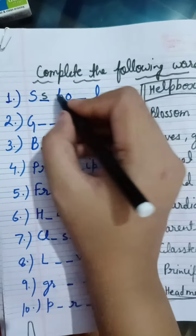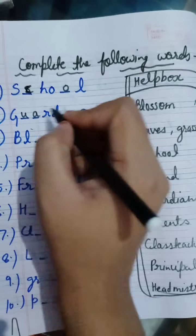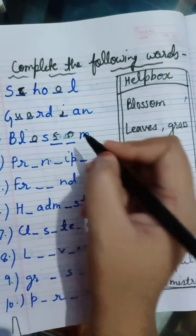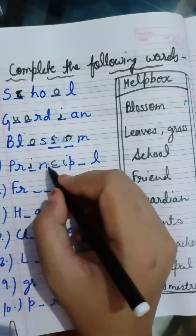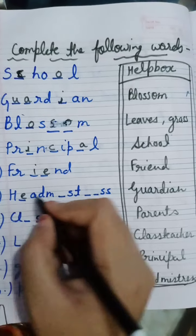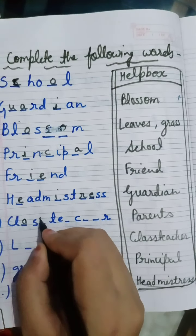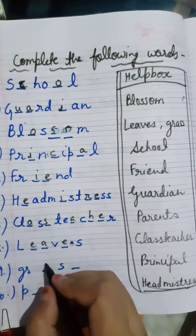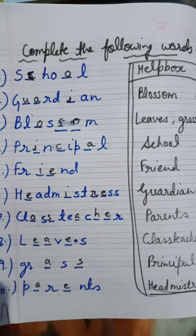The words to complete are: School (S-C-H-O-O-L), Garden (G-A-R-D-E-N), Blossom (B-L-O-S-S-O-M), Principal (P-R-I-N-C-I-P-A-L), Friend (F-R-I-E-N-D), Headmistress (H-E-A-D-M-I-S-T-R-E-S-S), Class Teacher (C-L-A-S-S-T-E-A-C-H-E-R), Leaves (L-E-A-V-E-S), Grass (G-R-A-S-S), Parents (P-A-R-E-N-T-S). So complete this work.